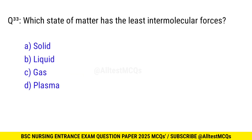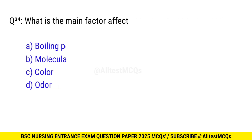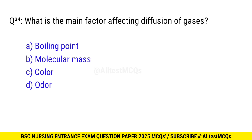Question No. 33: Which state of matter has the least intermolecular forces? The right option is C: Gas. Question No. 34: What is the main factor affecting diffusion of gases? The correct option is D: Molecular mass.